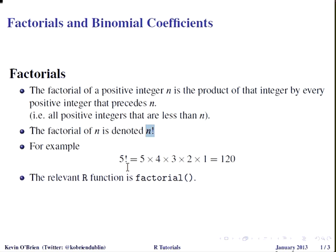Now for example, 5 factorial, what we will do is multiply 5 by every integer that precedes it, 4 by 3 by 2 by 1, until we get to our answer 120.